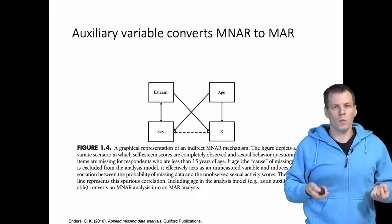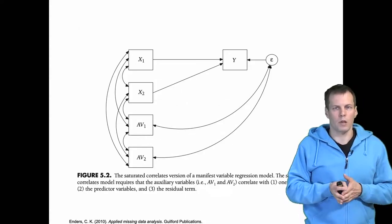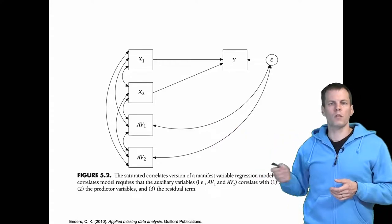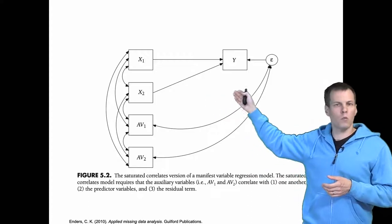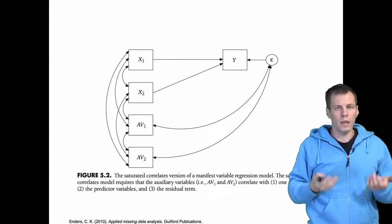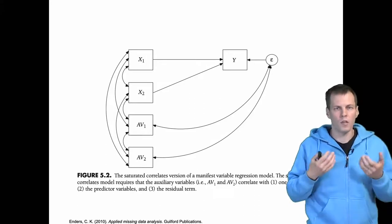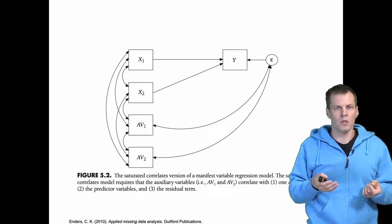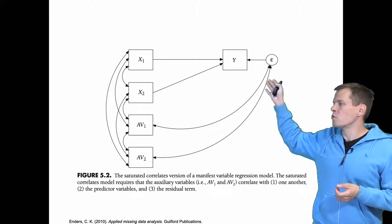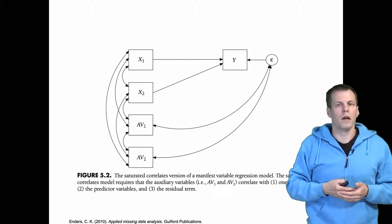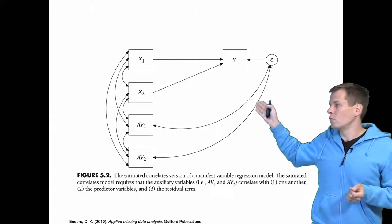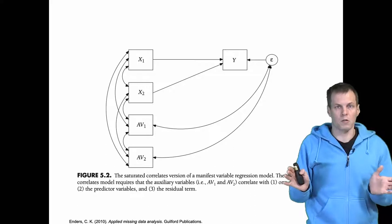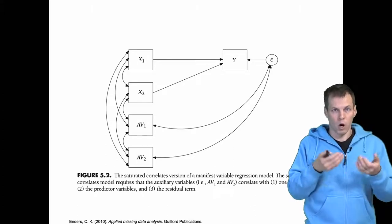If you do a full information maximum likelihood, then you need to do something like this. So these AV1 and AV2 are the auxiliary variables, X1 and X2 are the main variables, and Y is the dependent variable. In SEM framework we would add the auxiliary variables and allow them to be freely correlated with any of the predictors and also any error terms of observed variables. So we are saying that these auxiliary variables are freely correlated with everything.